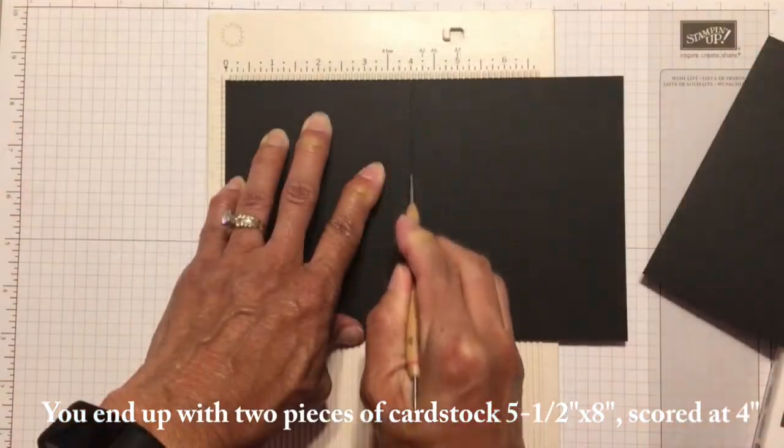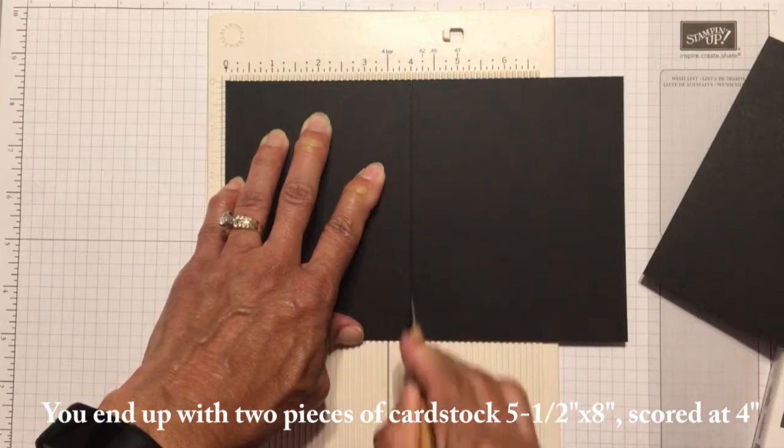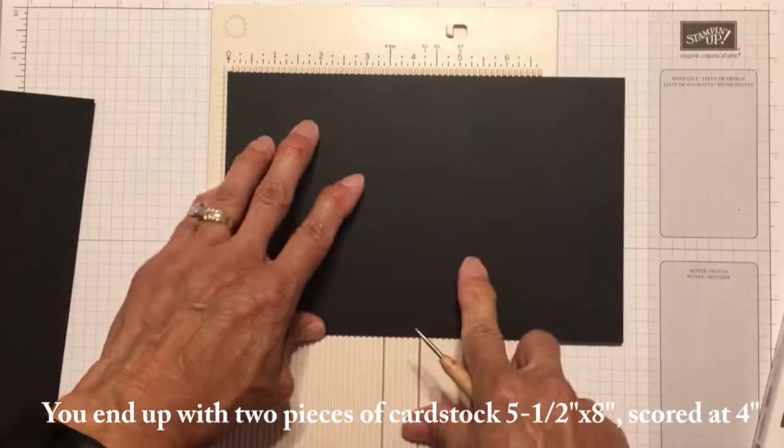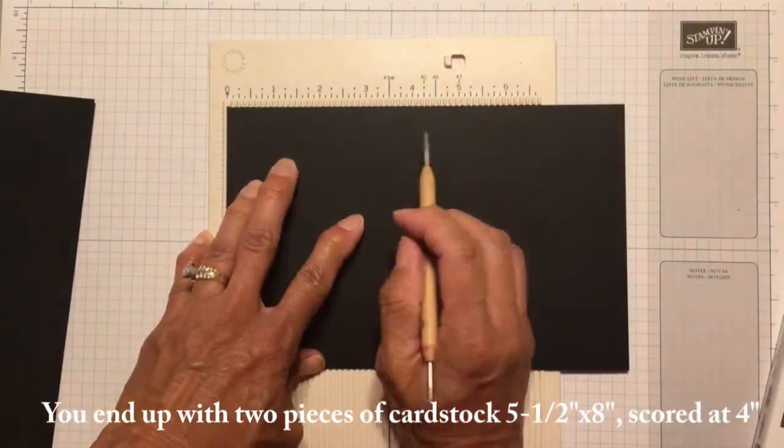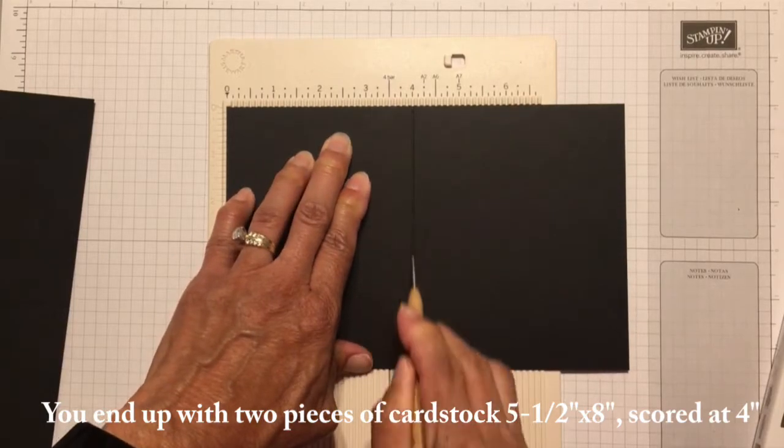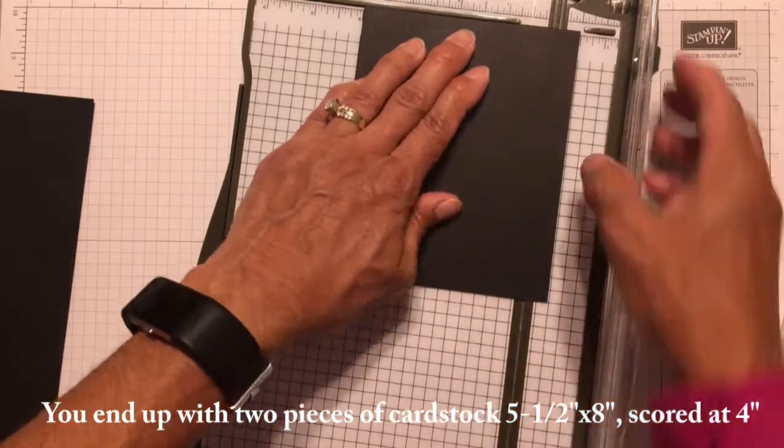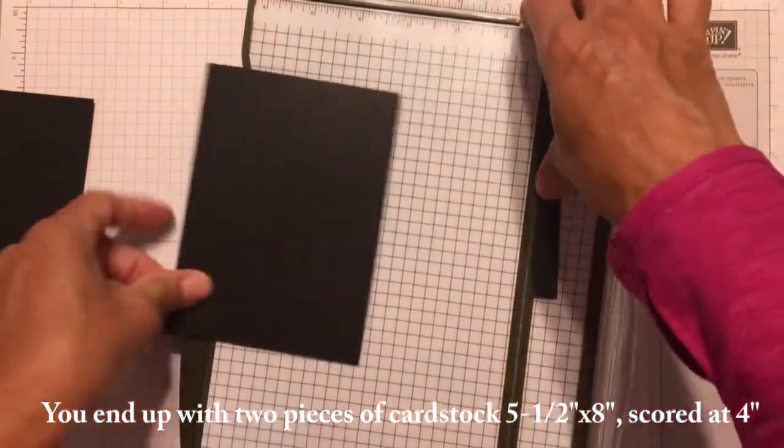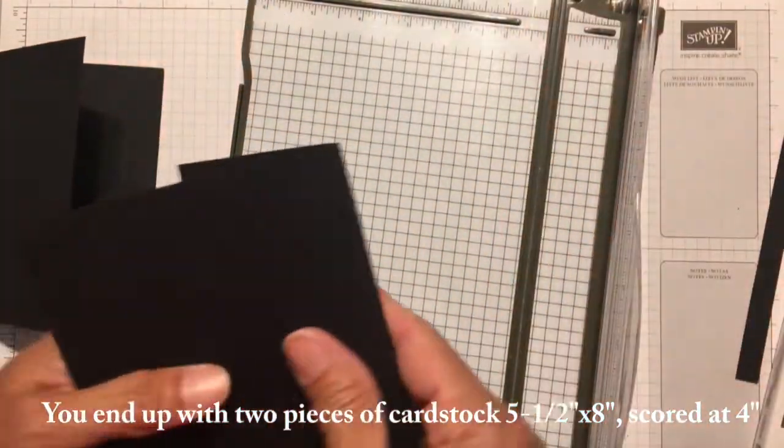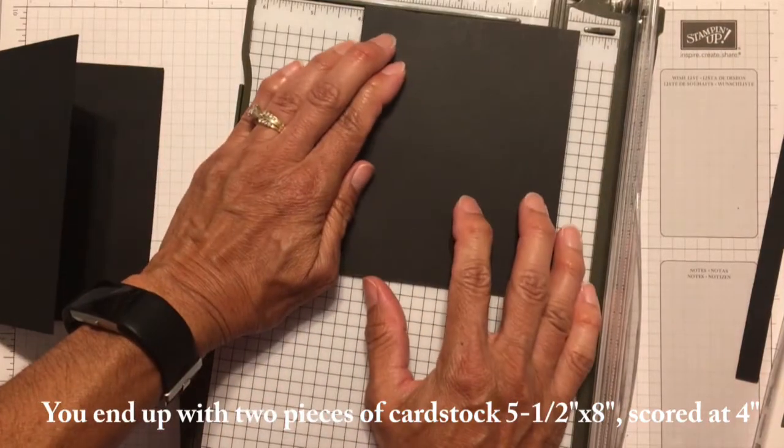Now, I could have trimmed my piece of cardstock to 8 inches instead of 8.5 inches, but I ended up cutting it in half first, and then I scored both pieces at 4 inches, and then folded them in half, and put them back in my paper trimmer, and cut off the additional half inch.